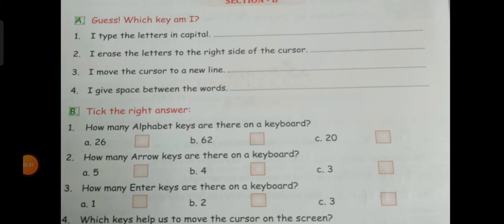Next: 'I erase the letter to the right side of the cursor.' The key which erases to the right side of the cursor is called the Delete key. Backspace key erases to the left side, and Delete key erases the right side.